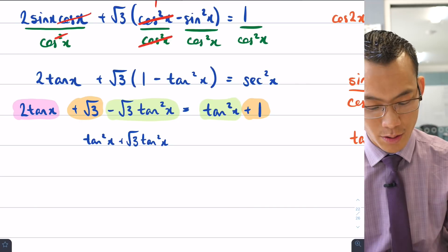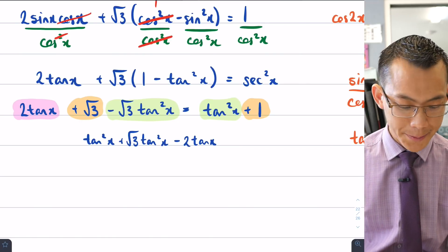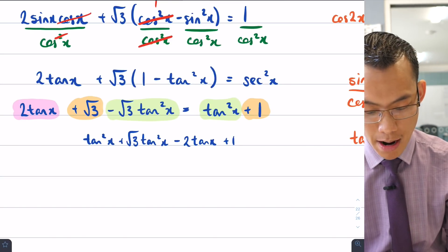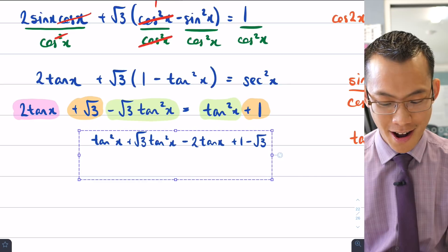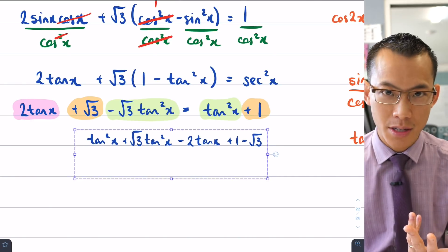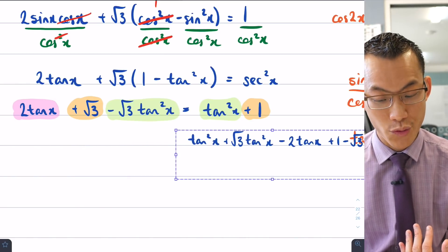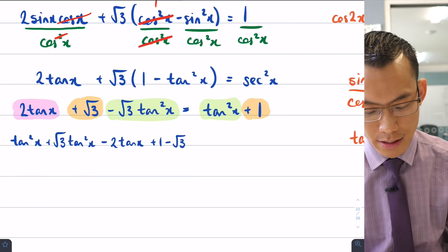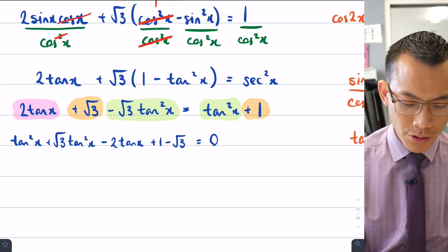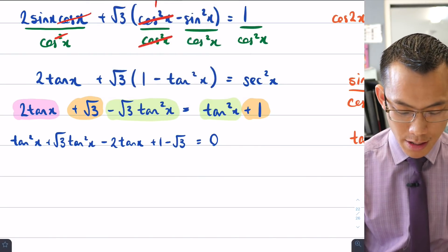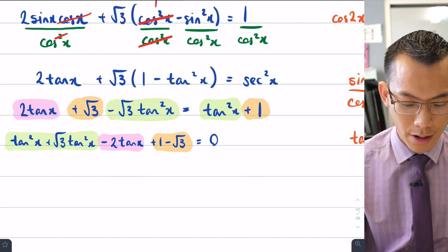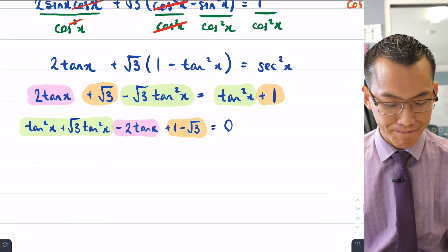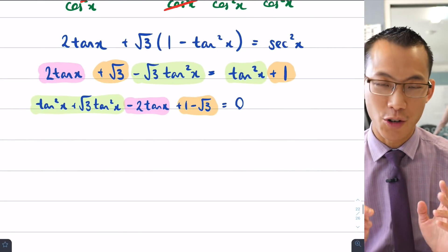Just to make it absolutely clear how I've collected these terms: the constant term is 1 − √3, the tan x term is −2 tan x, and the tan²x terms combine to (1 + √3)tan²x. You can see how I've gathered everything from the previous line into this quadratic form equal to zero.